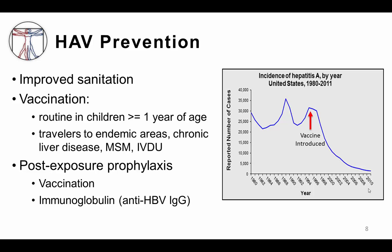The hepatitis A vaccine is recommended for anyone at high risk of infection, including travelers going to hepatitis A endemic areas, anyone with chronic underlying liver disease, injection drug users, and men who have sex with men. Additionally, both the vaccine and hepatitis A immunoglobulin have been shown to be effective in preventing symptomatic infection if given within two weeks after an exposure to the virus.